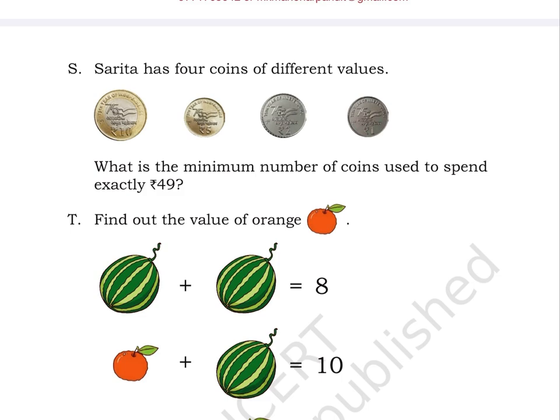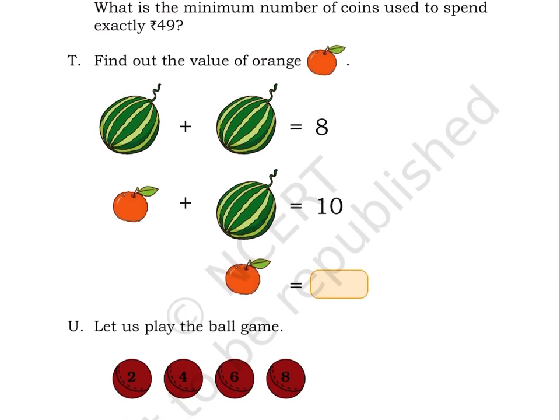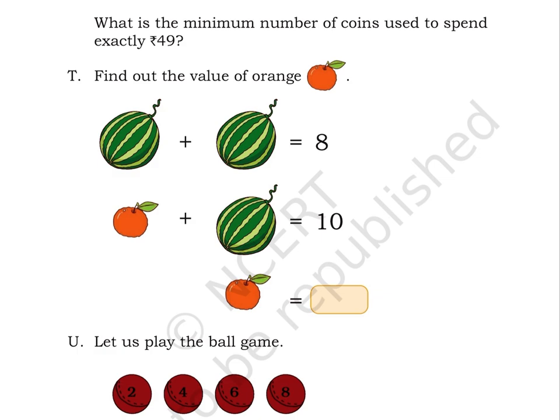Puzzle T: Find out the value of orange. A watermelon plus watermelon is equal to 8. Orange plus watermelon is equal to 10. And orange is equal to blank.